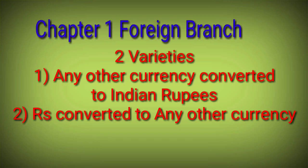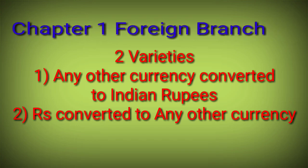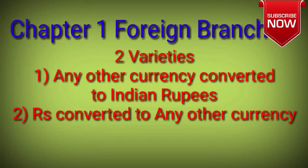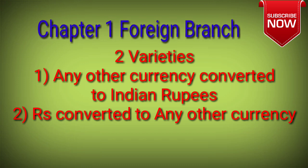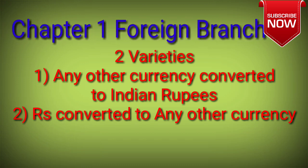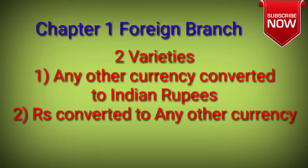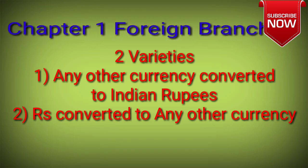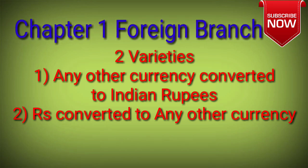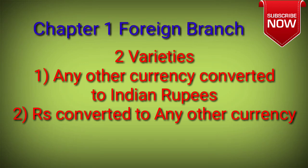Let's start. Chapter number one is Foreign Branch. You have a 15 marks question in this chapter. There are two varieties of questions which can be asked. Variety number one is any other currency converted to Indian Rupees, and variety number two is Rupees converted to any other currency. You have to practice both varieties.